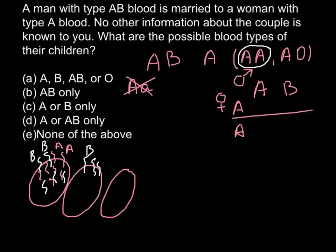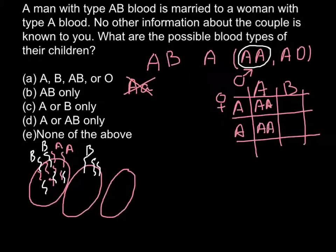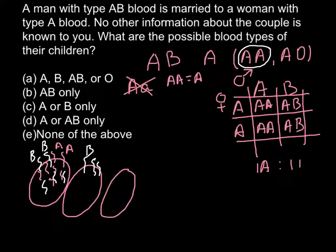So let's build a Punnett square, and see the outcomes of such a cross. So here we would have AA, AA here, AB, AB here. So I want to say that AA is just the same thing like just one A, because this is going to be just one kind of antigen that progeny received from both of the parents. So here we have one A ratio to one AB, or two A's to two AB's.